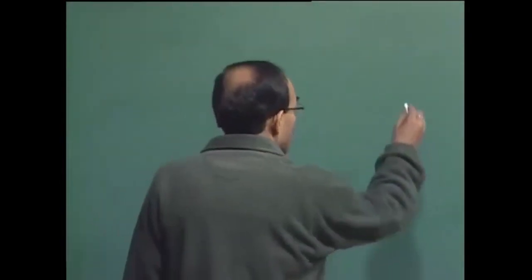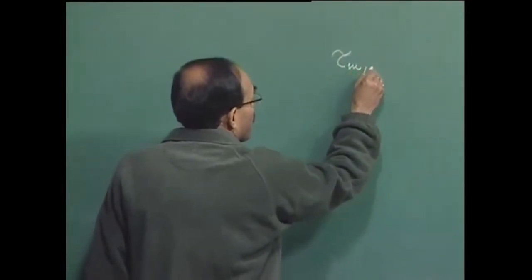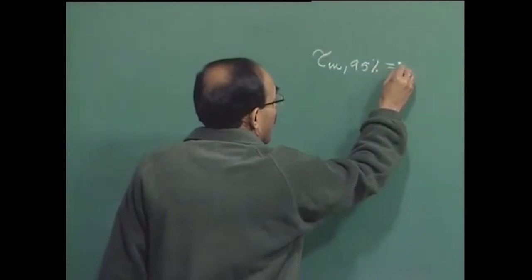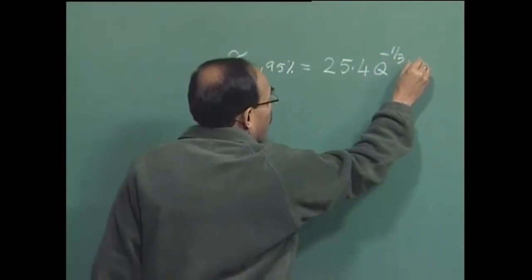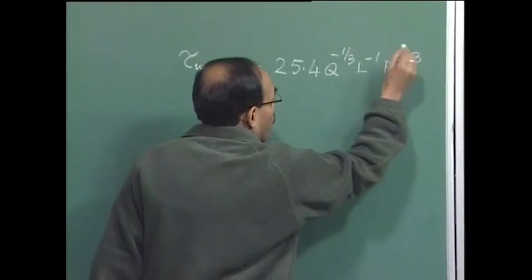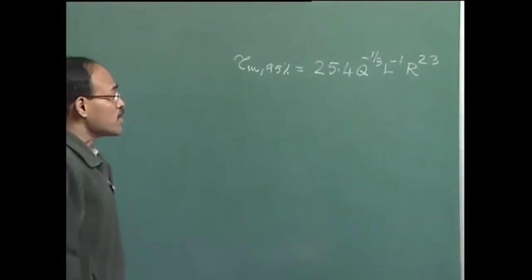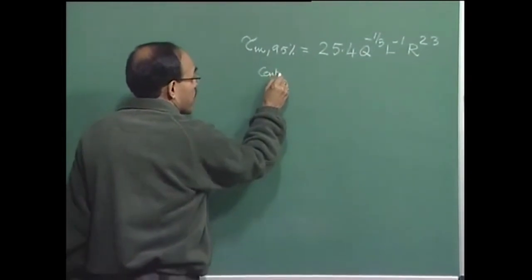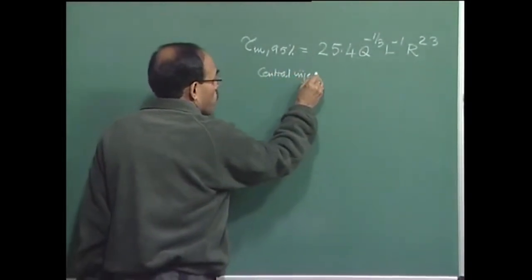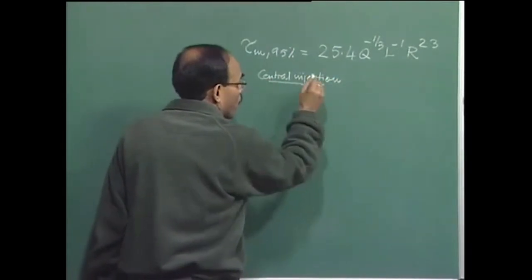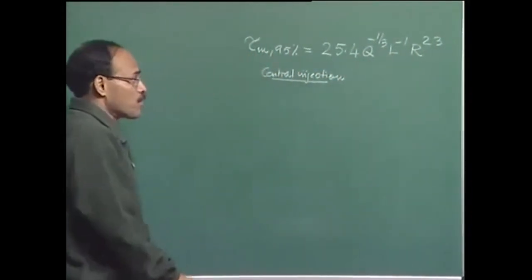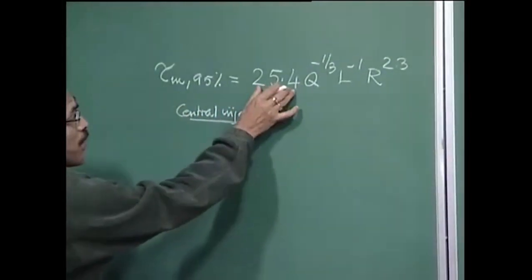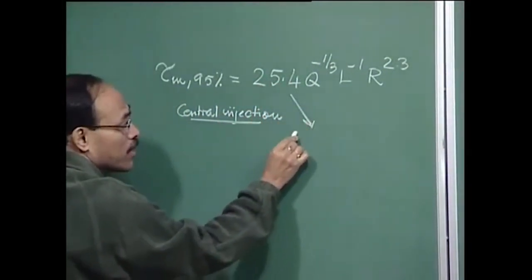We are talking about mixing in ladles. I have written correlations for mixing time in terms of operating variables. This correlation is valid for central injection — the axisymmetric injection — in a gas-charged ladle for a certain range of gas flow rate and a certain range of vessel aspect ratio. This constant, which is empirically fitted, depends on the degree of mixing.